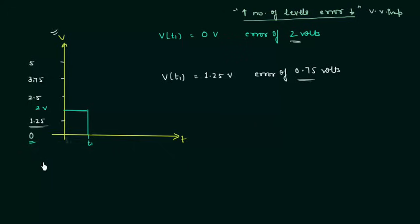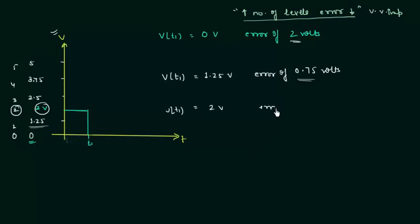If we increase the number of levels further — for example, levels equal to 0, 1, 2, 3, 4 and 5 — then 2 volts can clearly be measured as 2 volts. So voltage at t1 in this case is equal to 2 volts with an error of 0 volts. We have reduced the error from 2 volts to 0 volts by increasing the number of levels. This is all for this presentation.